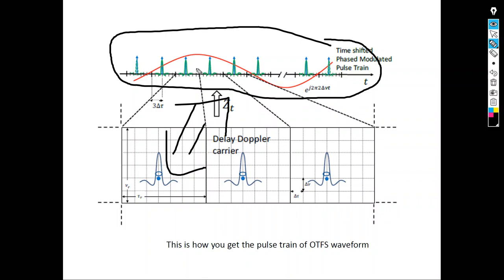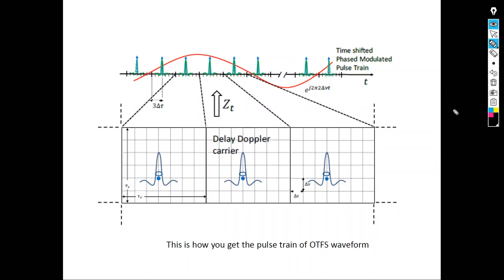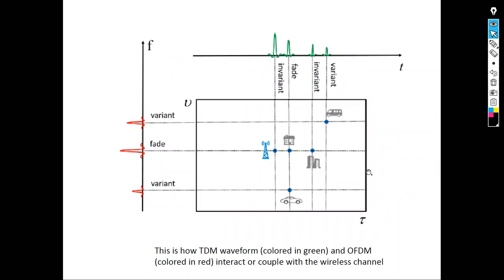In the time domain after the ZAK transform, this signal is called a time-shifted phase-modulated pulse train. This is what you transmit as an ideal waveform that is robust against channel imperfections.